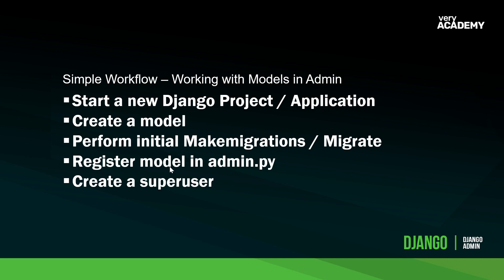This leads into our first tutorial where we'll go through the stages of building a simple project, making some models, and then going through the process of accessing the Django admin interface. This process starts with creating a new Django project, then creating a model — you don't actually need a model to access the admin interface, but it lets us interact with something once we log in. Once you've created a model, we perform an initial migration — make migrations and migrate — to apply our new model to the database. We then need to tell Django we want to interact with our new model in the admin area, so we register that model in the admin file. That allows Django to access the data so the admin site can generate interfaces for us to work with our database.